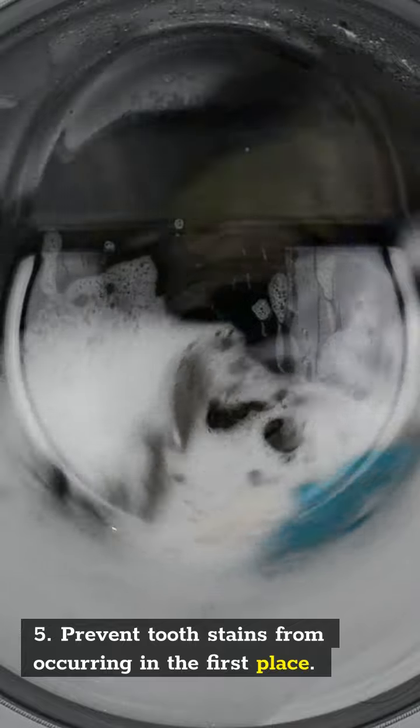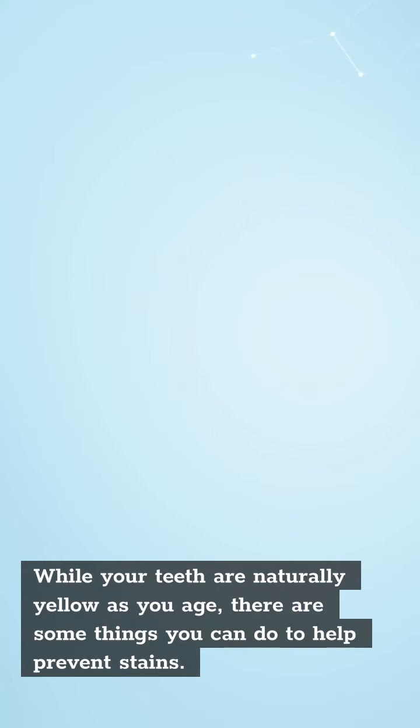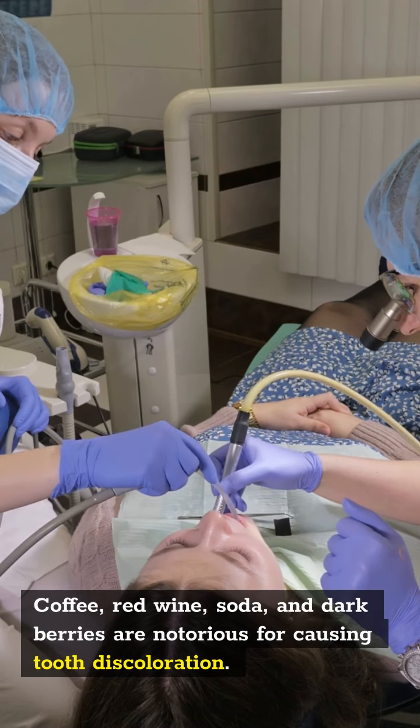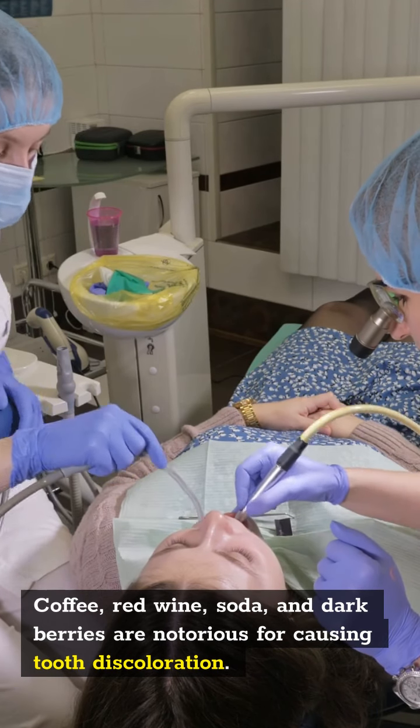Number five, prevent food stains from occurring in the first place. While your teeth are naturally yellow as you age, there are some things you can do to help prevent stains. Limit the consumption of staining foods and beverages. Coffee, red wine, soda and dark berries are notorious for causing tooth discoloration.